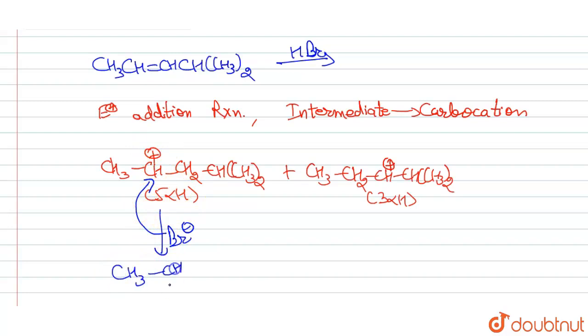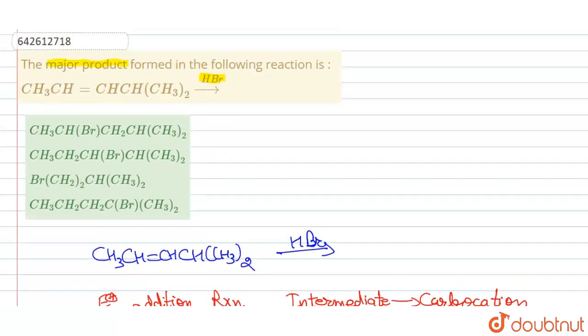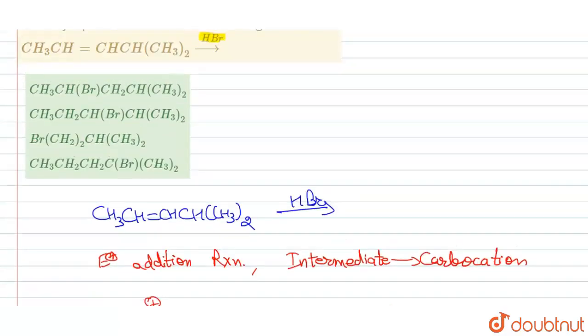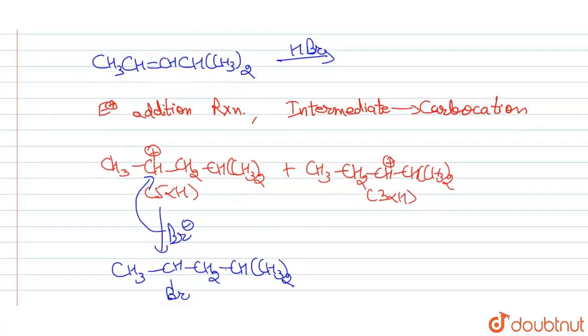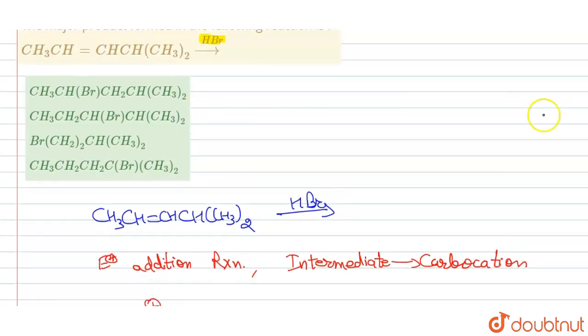What will be the product? CH3CHBrCH2CH(CH3)2.